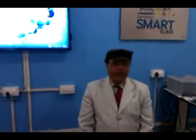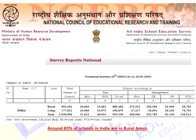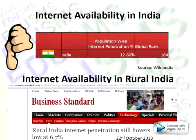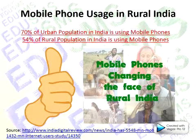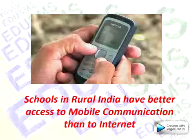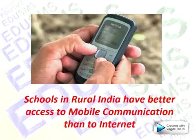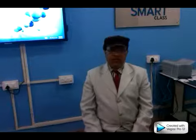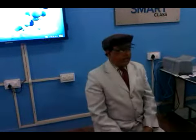Before I tell about my project, I want to discuss a scenario with you. India has 83% schools in rural areas where internet penetration is just around 6%, whereas 54% of schools in rural areas have cell phones. Hence, schools in rural areas in India have better access to mobile than to the internet.